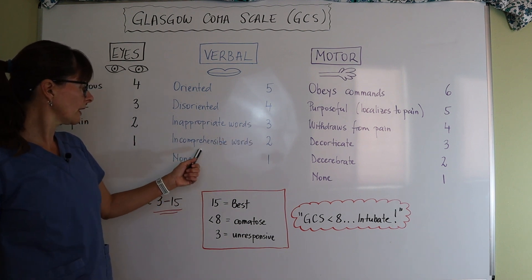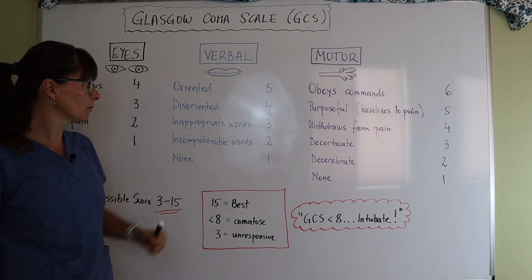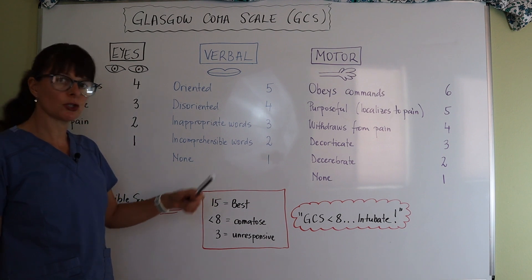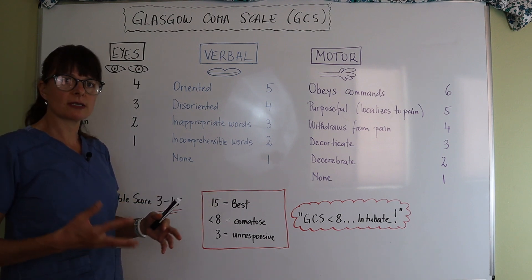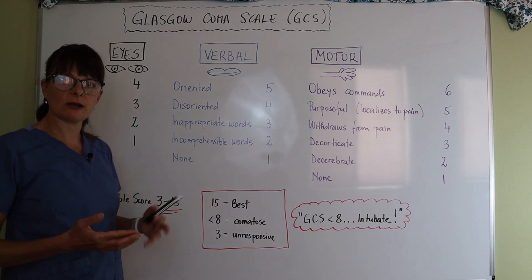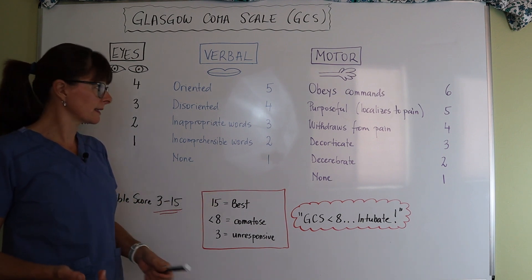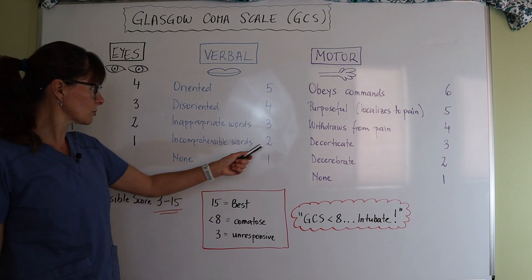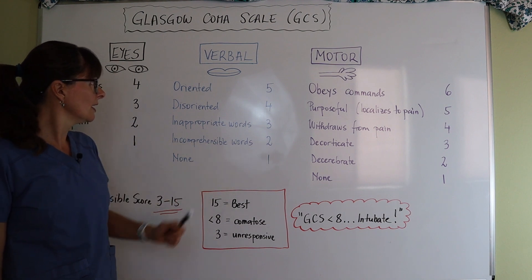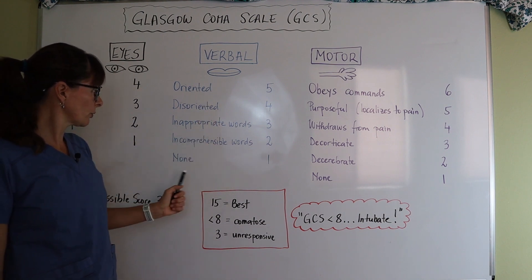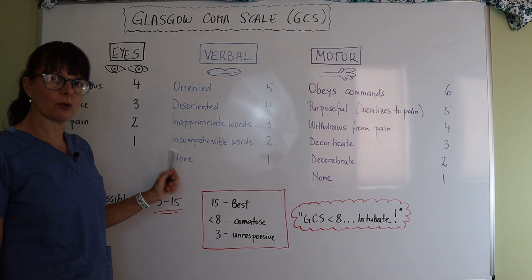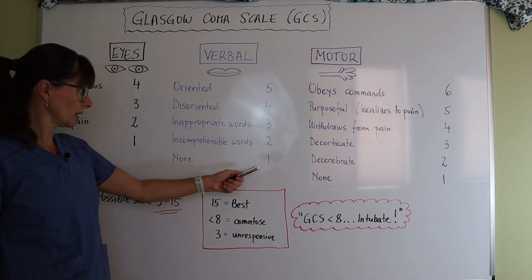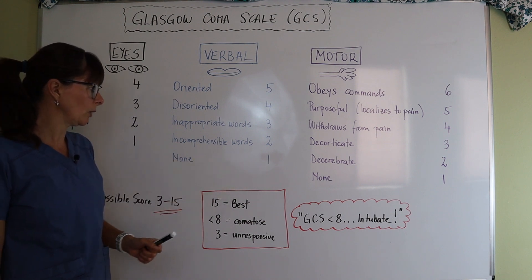If there are incomprehensible words, meaning just gibberish or sounds that don't make sense at all, that would be a score of two. And if the verbal response is none — the patient doesn't say or make a sound at all — it would be a score of one.